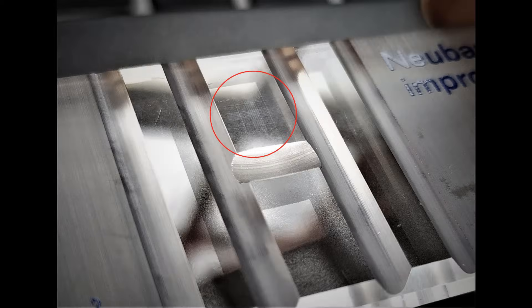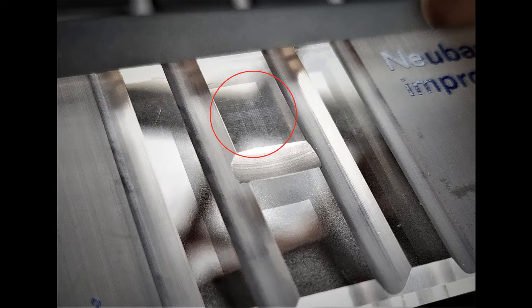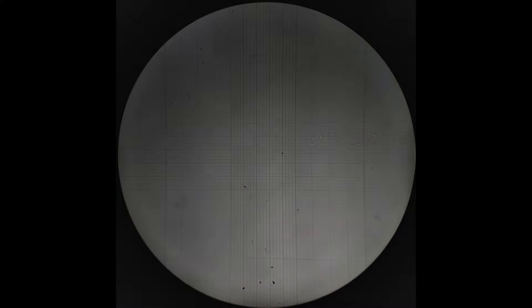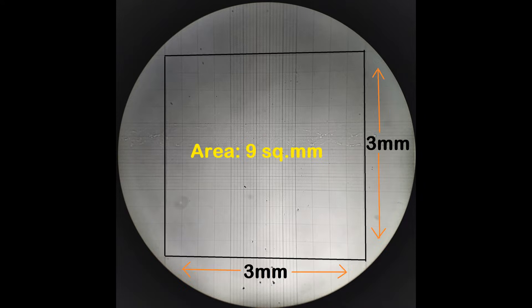Each counting chamber consists of numerous criss-crossing, laser-etched, fine lines which form tiny squares of varying sizes and measurements. The counting grid has an overall dimension of 3 by 3 mm with an area of 9 mm².